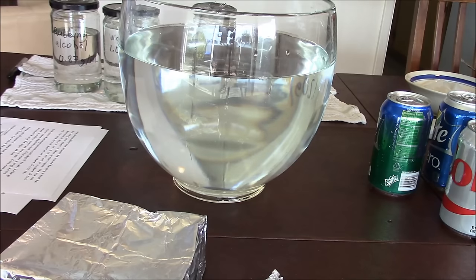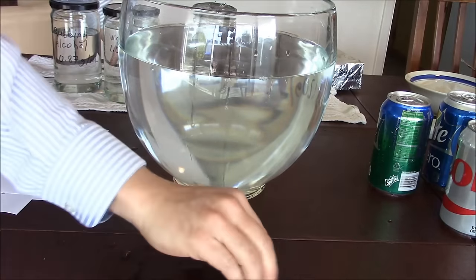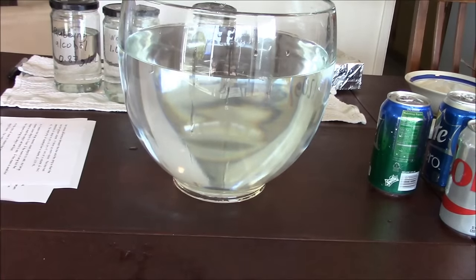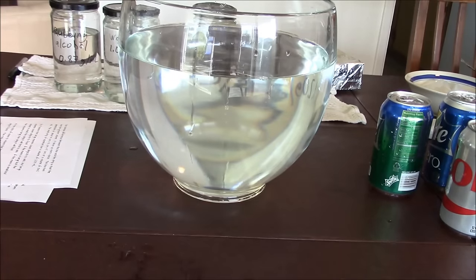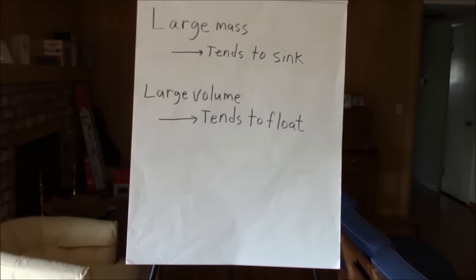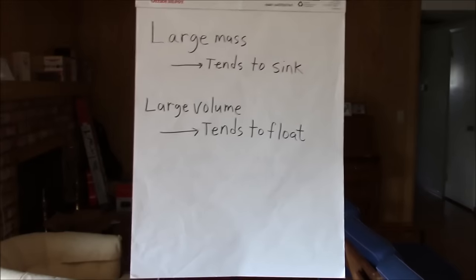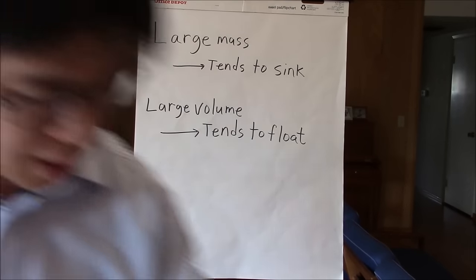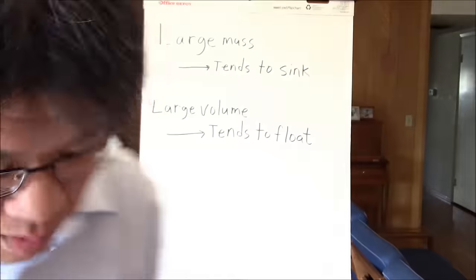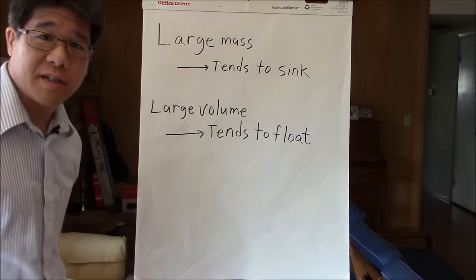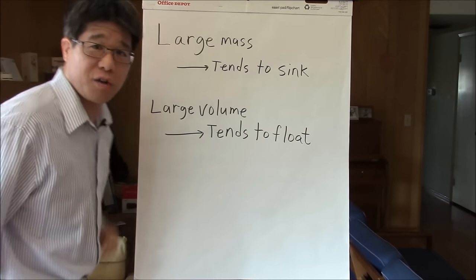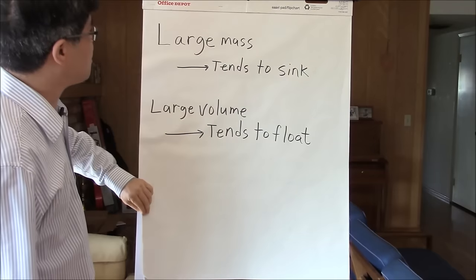Let's see if we can write that out. I'm going to adjust the camera so we can see the board. To summarize: objects with large mass tend to sink, and objects with large volume tend to float. Let's combine these two properties.